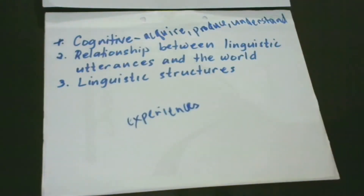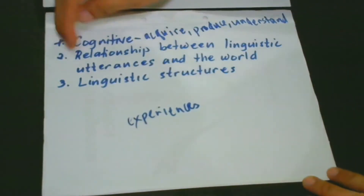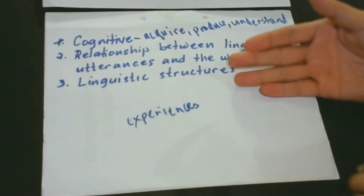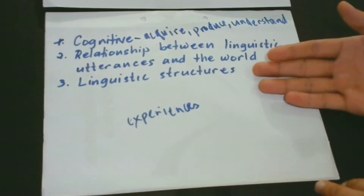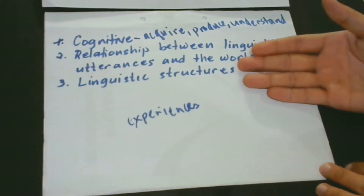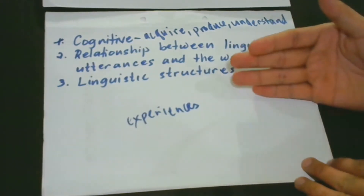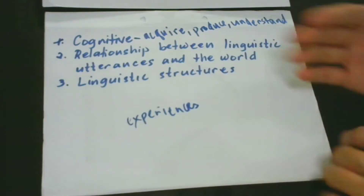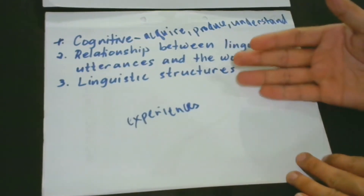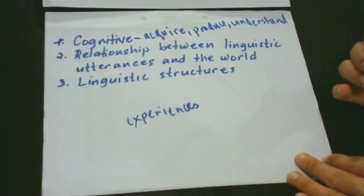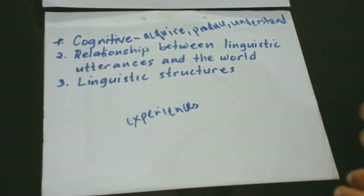The third aspect concerns linguistic structures. Our understanding of this aspect is important because structure provides the vessel in which to form and combine words in a comprehensive pattern. This is why the linguistic structure of the English language is different from other languages, although there could be some similarities.